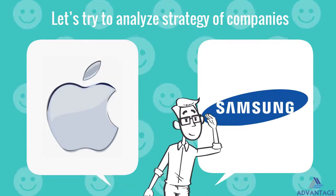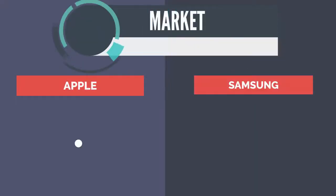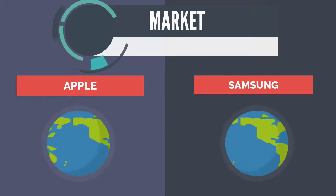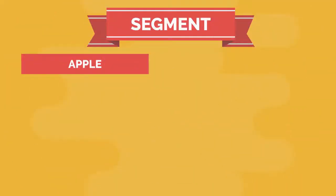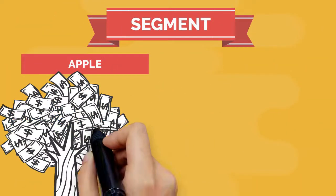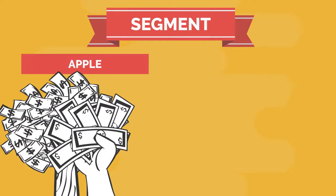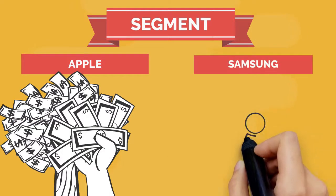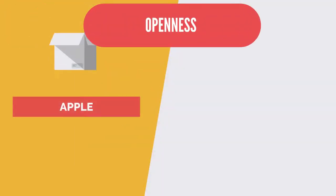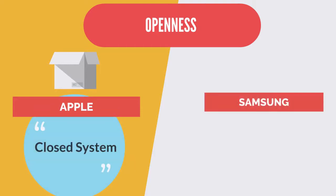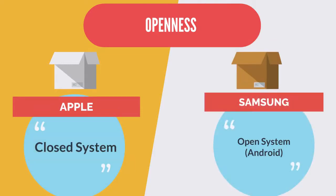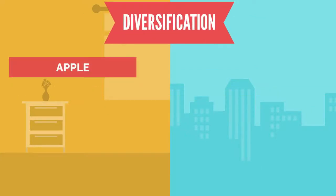Both Apple and Samsung appeal to a global market. For Apple, their products cater to Class A customers and Millennials. Samsung products cater to all segments. Products are differentiated in terms of openness: Apple's ecosystem is closed, while Samsung uses an open system — Android.